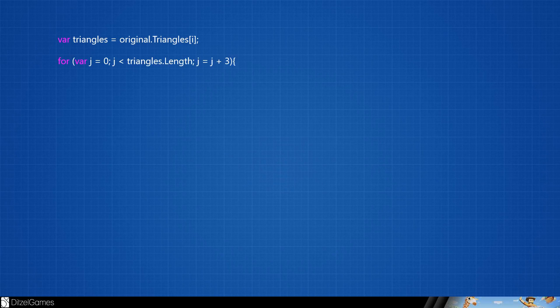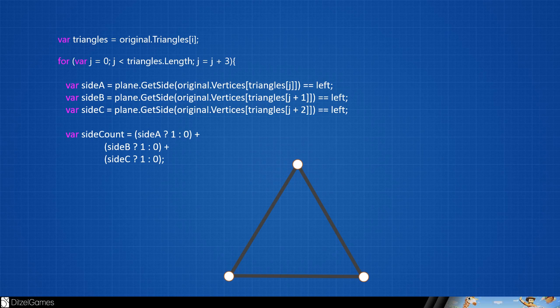Grab all triangles. Iterate over them. If one of the points are on the left side, skip the triangle. If all of them are, add them to a new mesh.